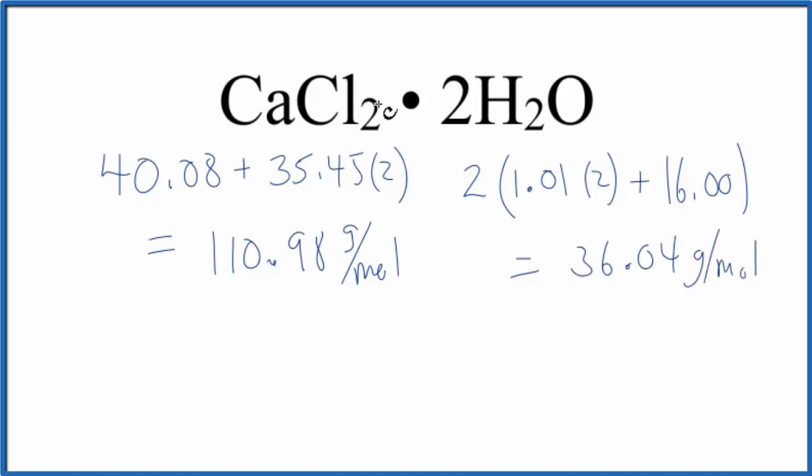So now we have the molar mass for the calcium chloride and for the two water molecules here. We just add those together. We have 147.02 grams per mole. And that means if we have one mole of this calcium chloride dihydrate, it'll weigh 147.02 grams.